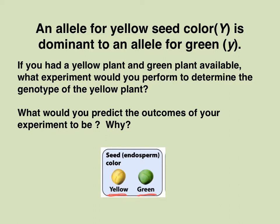The genotype of the green-seeded plant would be little y, little y — that's the homozygous recessive. Green is the homozygous recessive phenotype, and little y, little y is the homozygous recessive genotype. Yellow plants could be big Y, big Y, or they might be big Y, little y — but we know they have at least one dominant Y because they're yellow. We could simplify this and say the genotype of the yellow plant is Y-bar.